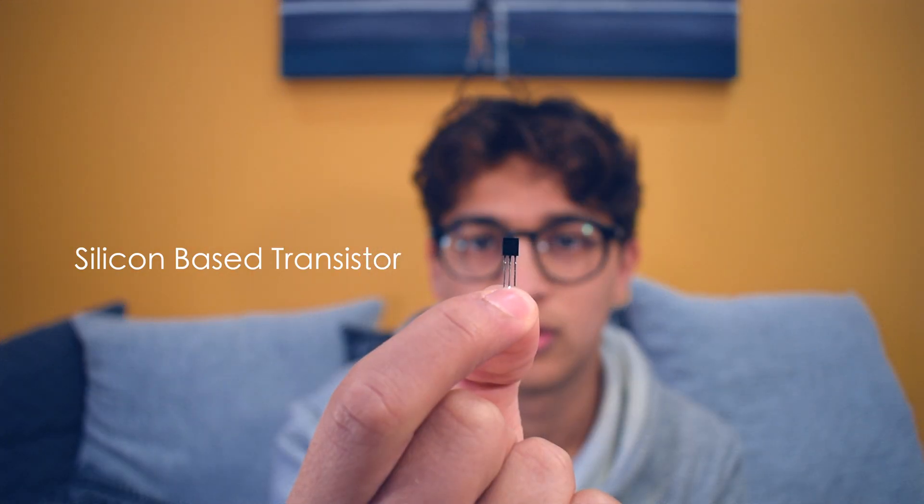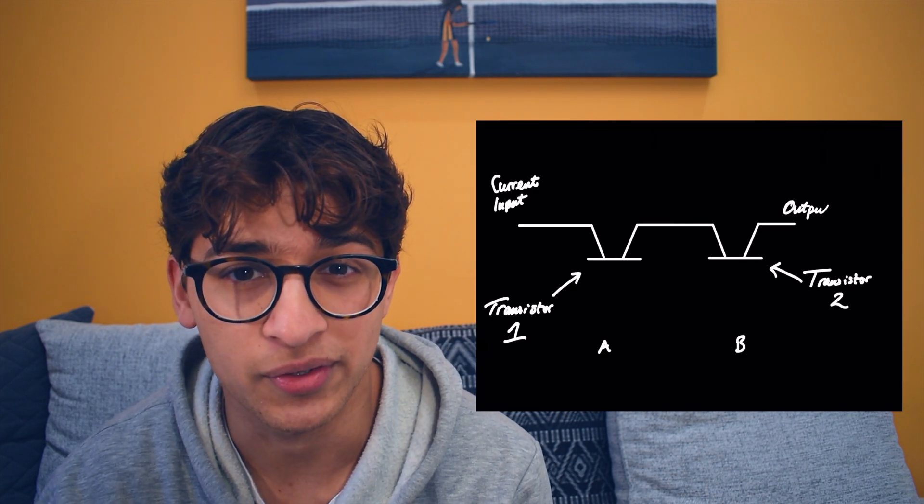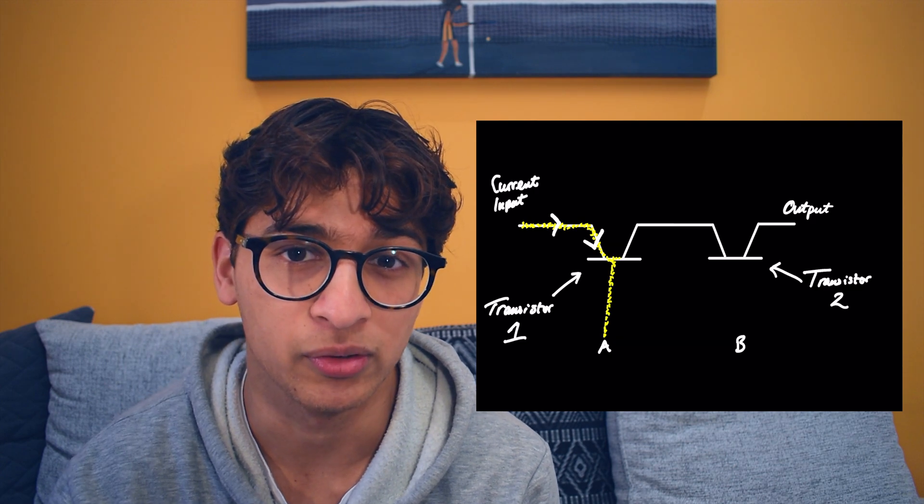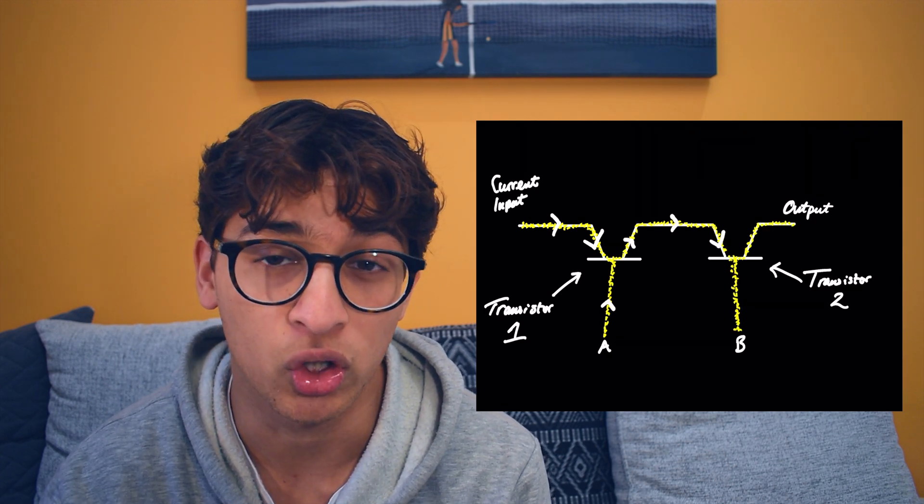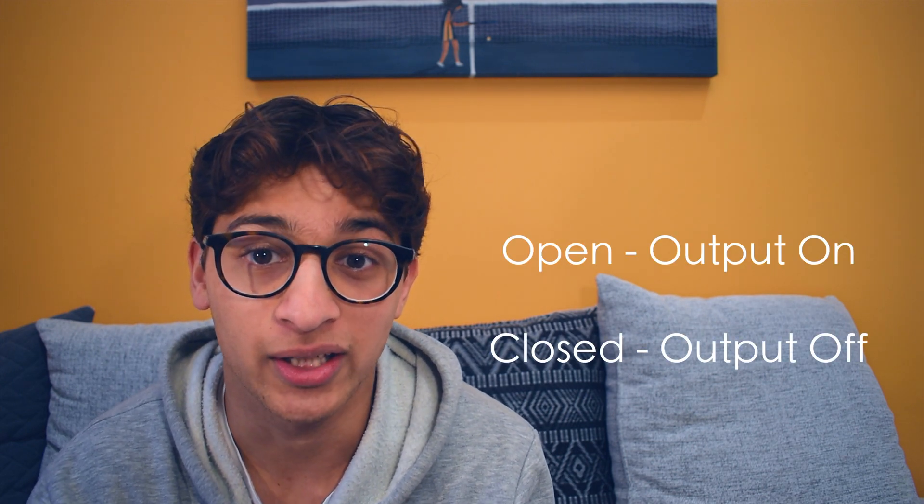Modern computing really started with the invention of the silicon-based transistor, which allows us to switch electricity on and off many times per second. But why is that important? Well, silicon is a semiconductor, meaning that under certain conditions it carries a current. As you can see, A and B are the input signals, and in order for a signal to pass through, both A and B need to be on. We call these silicon arrangements gates, as they can either be open or closed — you know, like a gate.